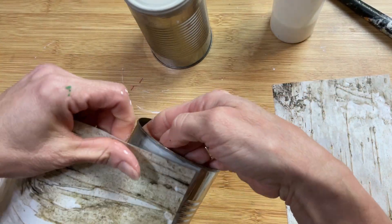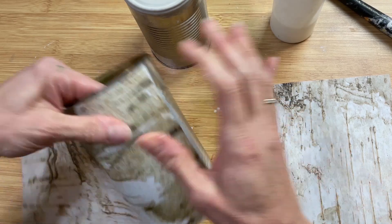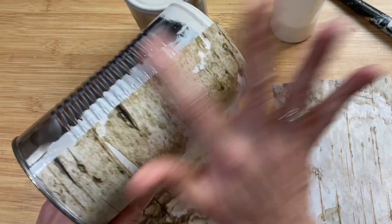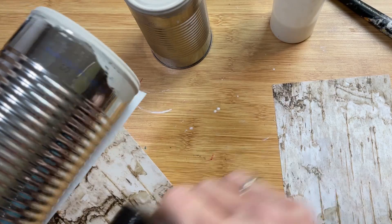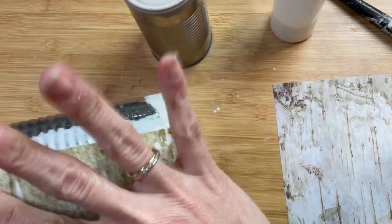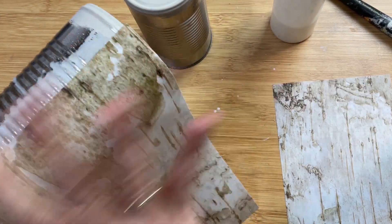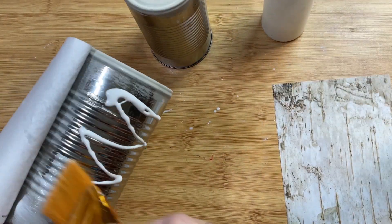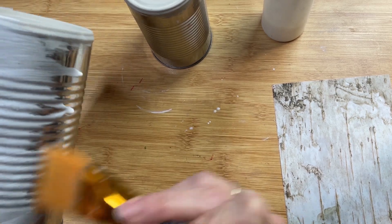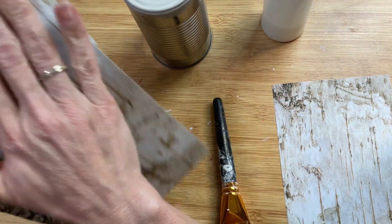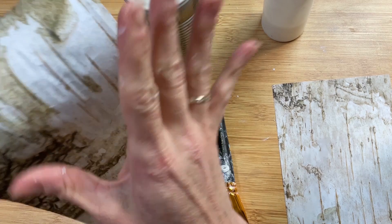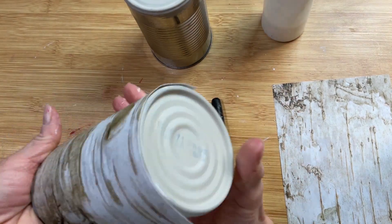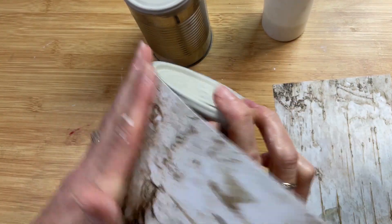I saw a picture of a centerpiece using actual pieces of birchwood and I thought, you know what, I can make that without having to go find an actual tree and cut a tree down. So I'm mod podging the paper onto all six of these cans and I am spritzing a little bit of water.